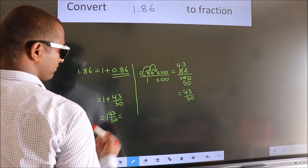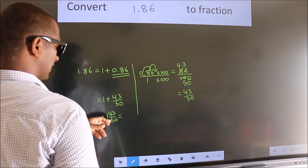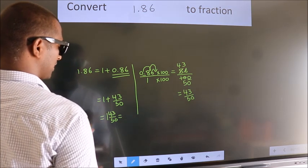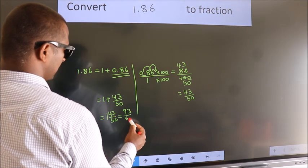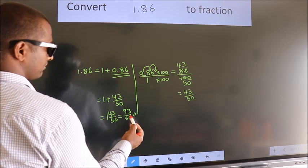And in improper fraction it is 1 into 50, 50 plus 43, 93 by 50 is our fraction.